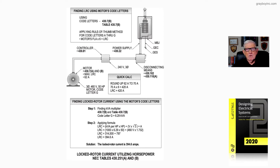The quick calc shown here lets us use the motor nameplate. If it's 62 amps, as a rule of thumb round it up to the nearest even unit of 10, which would be 70 amps. For code letters A through G, multiply by six — giving 420 — then divide by 3 for a circuit breaker and round up: 3 into 420 is 140, round up to 150.